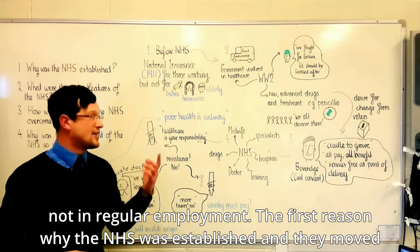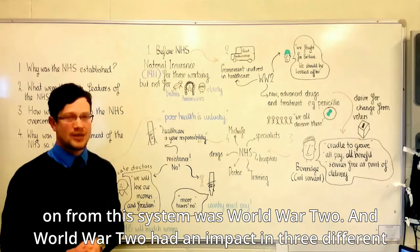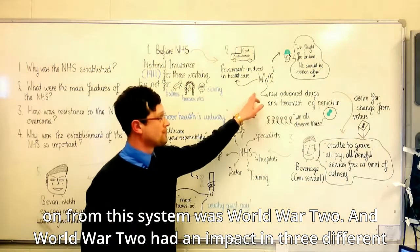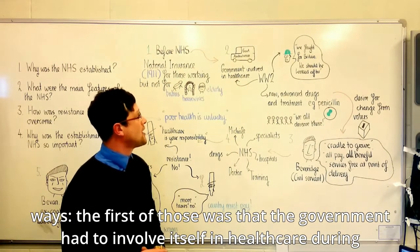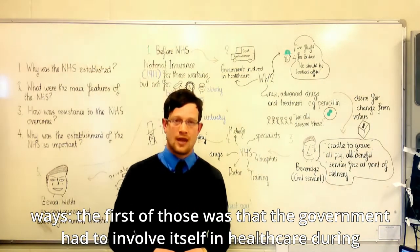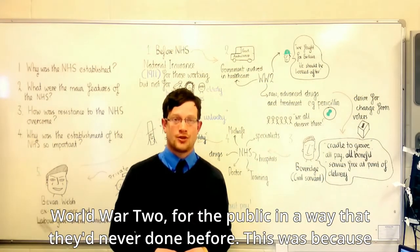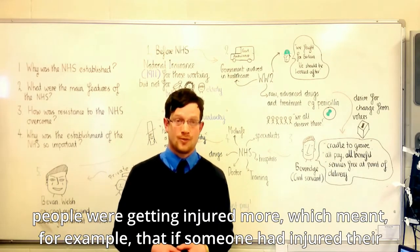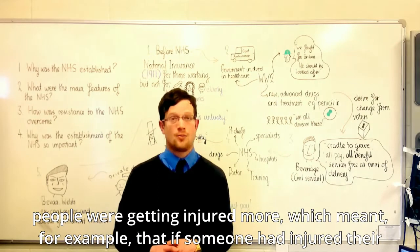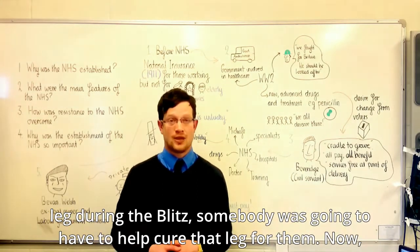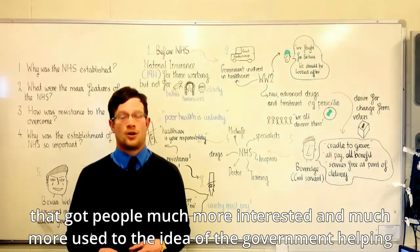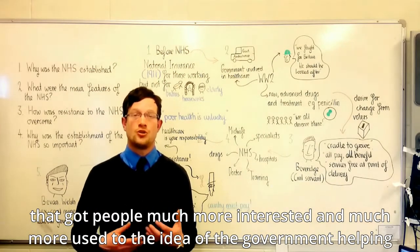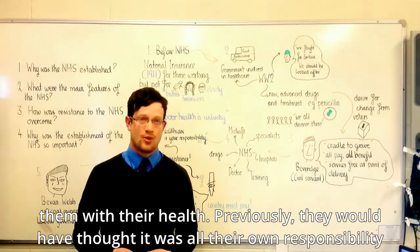The first reason why the NHS was established and they moved on from this system was World War II, which had an impact in three different ways. The first was that the government had to involve itself in healthcare during World War II for the public in a way they'd never done before. People were getting injured more — for example, if someone had injured their leg during the Blitz, somebody was going to have to help cure that leg for them. That got people much more interested and used to the idea of the government helping them with their health.